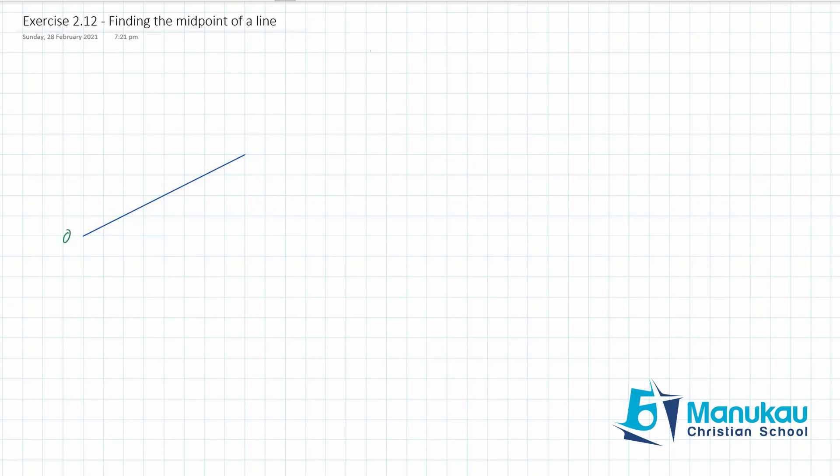Now let's say we wanted to find the midpoint of this line. Let's say that this is at (0,0) and I think we said this is (8,4). Now if you look at this line logically, you can see I've gone across eight steps and then I've gone up four steps.